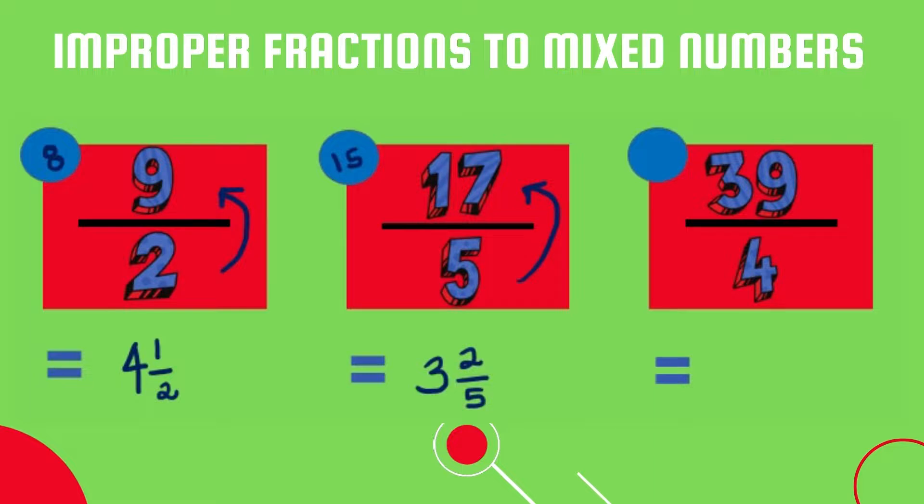For our last example, 39 over 4, we ask ourselves how many fours in 39. There are nine fours in 39, and nine times four is equal to 36. Once again we have a remainder, and the remainder is three. Three is our numerator, and our denominator stays unchanged as four. 39 over 4 as an improper fraction is therefore equal to 9 and 3 quarters as a mixed number.